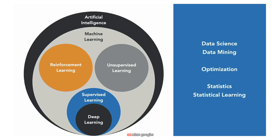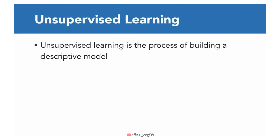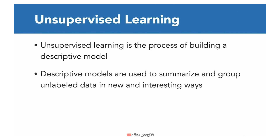Artificial intelligence is a large field in computer science that deals with the simulation of intelligent behavior in computers — including behaviors such as visual perception, speech recognition, decision making, and translation between languages. Unsupervised machine learning is the process of building a descriptive model. We can think of descriptive models as machine learning models that help us summarize and group data in new and interesting ways. When we have data that may have patterns we cannot readily observe, we use the descriptive model to help identify those patterns.